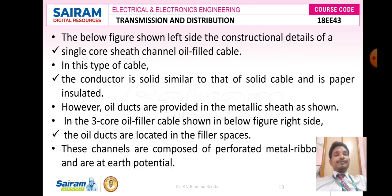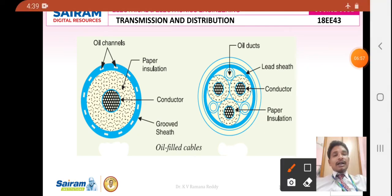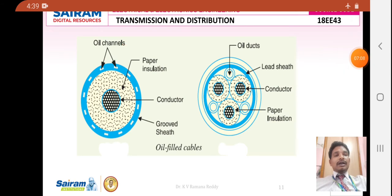Here I am going to show one more oil filled channel type which is shown at the left side of this figure. In this figure, instead of that center of the core oil channels, the oil channels are run at the lead sheath. The reason oil channels are placed at the lead sheath is because lead sheath is a hard insulating material which may be affected by voids.